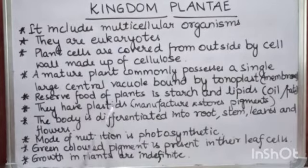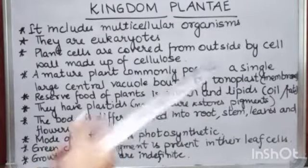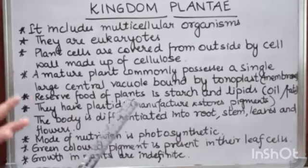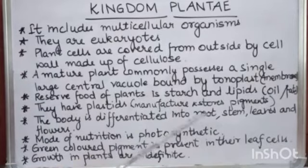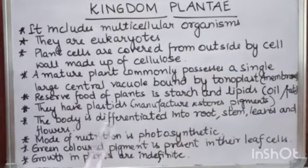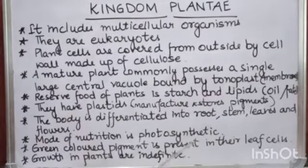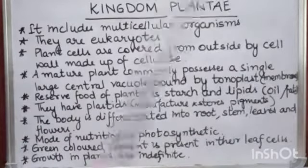The reserved food of plants is starch and lipids — in the form of oils and fats. Plants also have plastids, which are organelles that contain pigments responsible for the green color of plants. They manufacture and store these pigments. The body of a plant is differentiated into roots, stem, leaves, and flowers. The mode of nutrition is photosynthetic — plants prepare their food using the sun's energy, synthesizing food using sunlight.